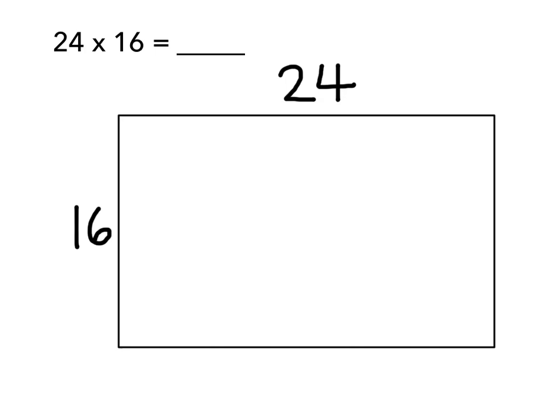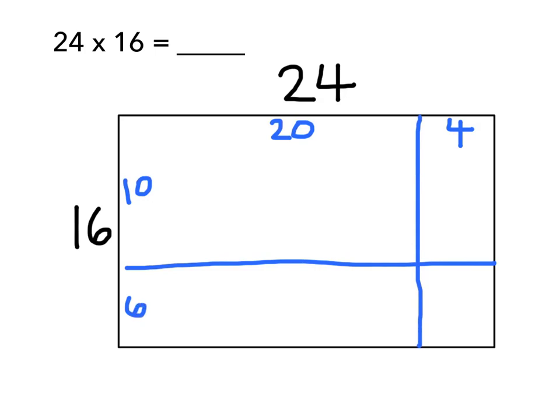Next, I need to decide how to break apart my array into more manageable pieces. I know that I can break apart 24 by place value. I can think about the 2 being equal to 20 and the 4 being equal to 4. So I can break this number apart into 20 and 4. I'm going to make most of that side 20 and the smaller piece 4 to show that 20 is much larger than 4. I can also break apart 16 by place value if I think about the 1 representing 10 and the 6 representing 6. Now I have much easier numbers to work with.